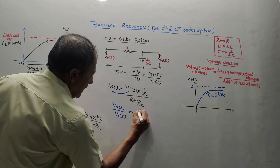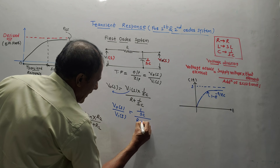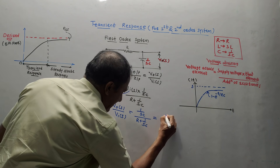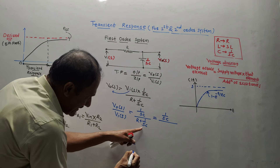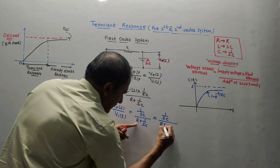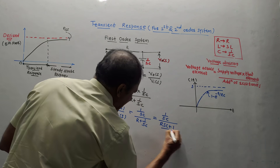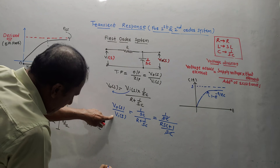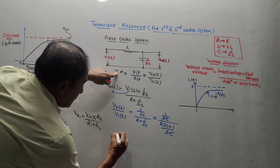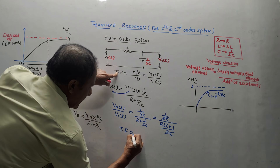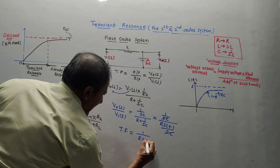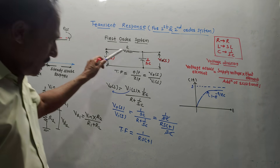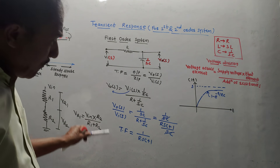Simplifying the expression: V0(S) over Vi(S) — the transfer function — comes out to 1 divided by (RSC + 1). This is the transfer function equation for the first order system.